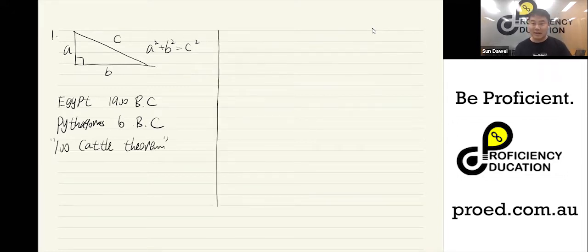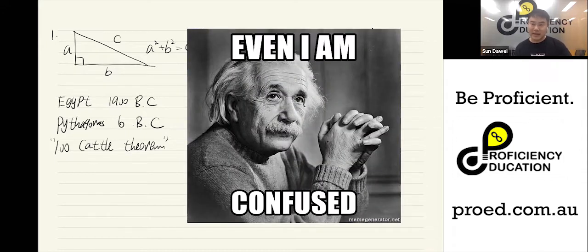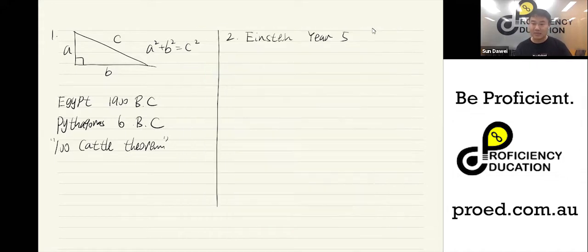Now let's talk about how Einstein proves his Pythagoras theorem when he was in year five. So in 1949, he was interviewed and he recalled an event when his uncle comes to his house to teach him some geometry. And he's so confused about the way he explained Pythagoras theorem. That's why he decided to do his own. He started off by drawing a right angle triangle, like what we did in the beginning. Let's call it side A, side B, side C. He produced a perpendicular height.